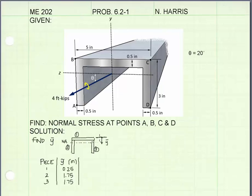cross-section, the distance down to the centroid of each piece 1, 2, and 3.